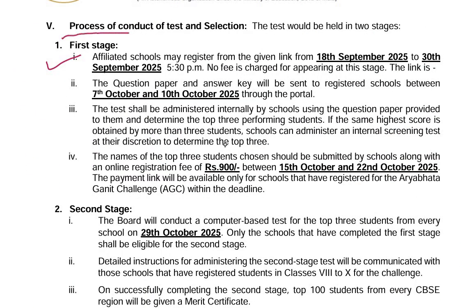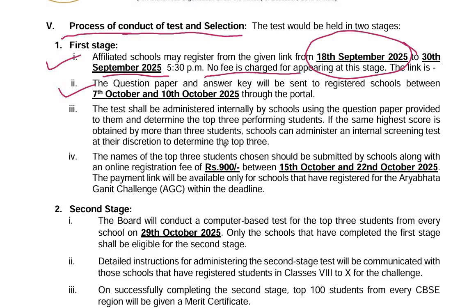Now we will see the process of conduct of test and selection. In the first stage, affiliated schools may register from the link given in the notification from 18th to 30th of September 2025. No fee will be charged for appearing in this stage. The question paper and answer key will be sent to the registered school between 7th and 10th of October through the portal.